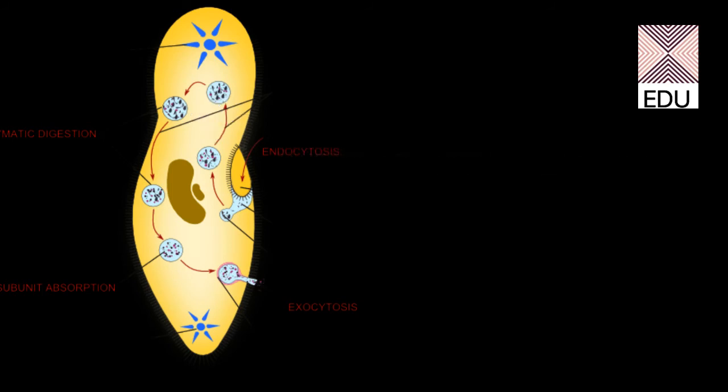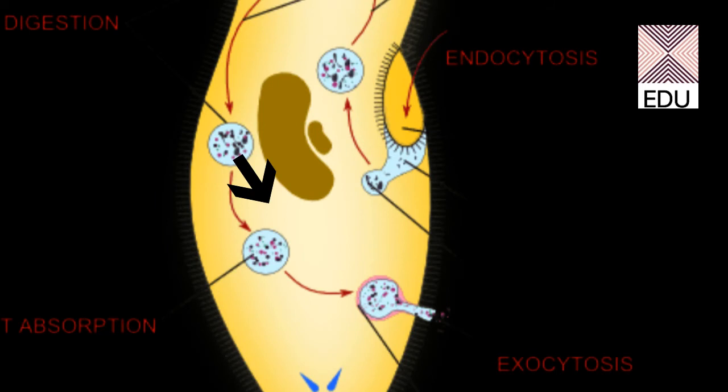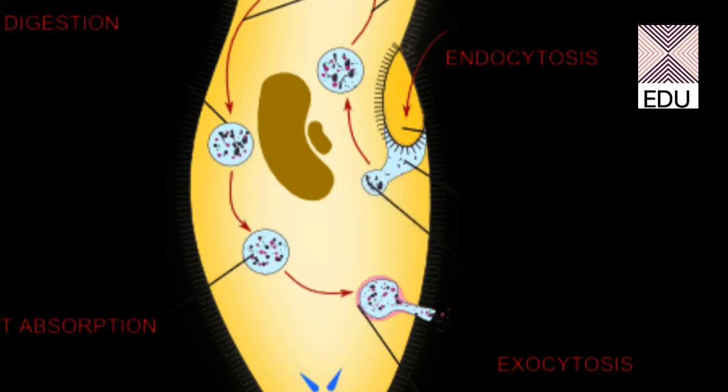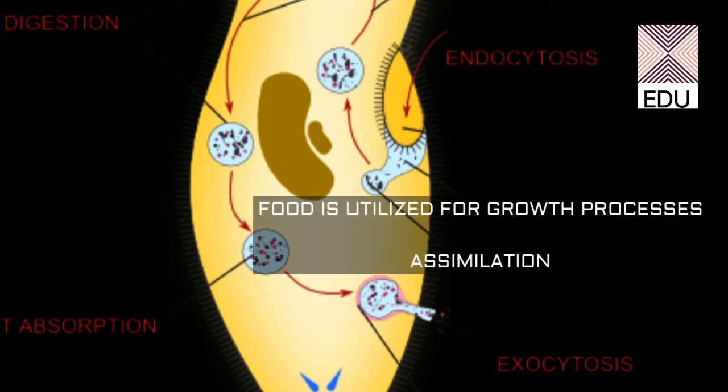These enzymes are poured onto the food inside the food vacuole and digest the food. The digested food is taken out of the food vacuole during circulation and becomes part of the cytoplasm. This digested food is used by paramecium for its growth. This is called assimilation.